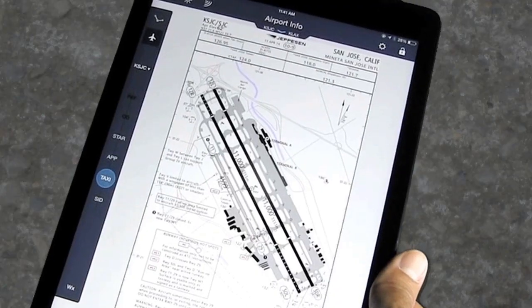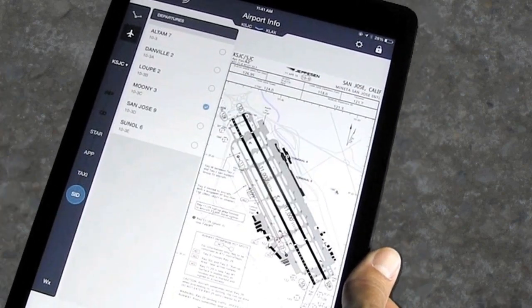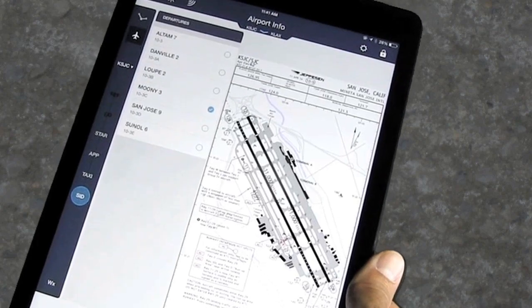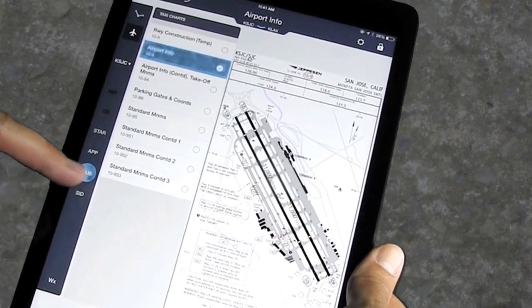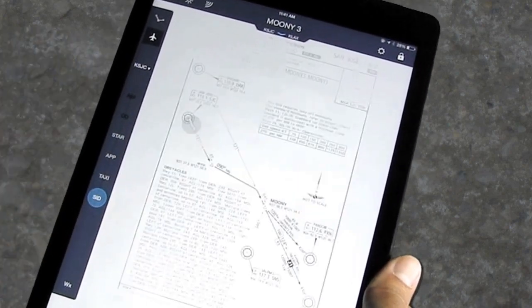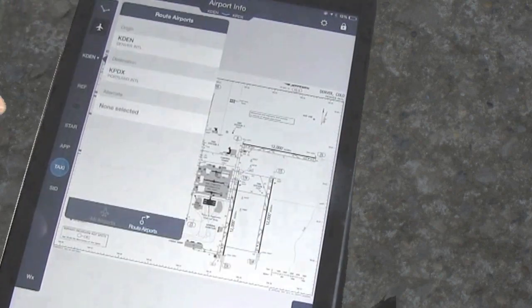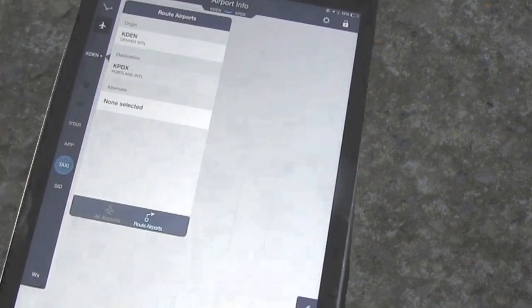Now it's a simple two finger swipe from my taxi chart to my departure. I can also tap on the chart category to go to the last accessed chart in that category. And this is one of the examples of how we increase the usability of the application by minimizing the number of steps it takes to access the data.